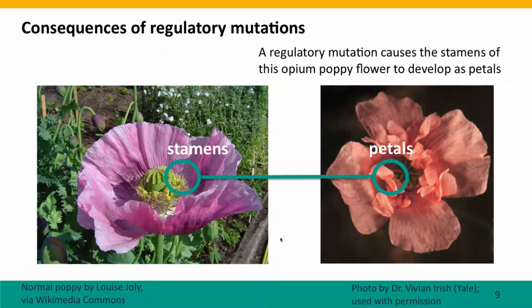We like these mutations in plants because they often make the flowers look prettier, but we consider them serious problems usually when they happen in animals. Here's a normal poppy — you can see it has a typical poppy structure. It's got simple petals, and then in the center of the plant it's got the stamens that produce the pollen.